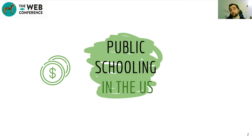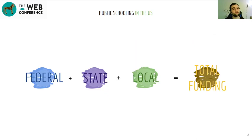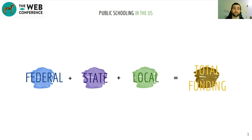For those unfamiliar with public schooling in the U.S., it is a widely accessible and free-of-charge schooling system that mainly relies on three sources of funding: federal and state funding, which represent nationwide and state-specific contributions, and the remainder from local property taxes. Each state is broken down into multiple schooling districts with legal boundaries, and any property within a district contributes to its public schools through taxes.